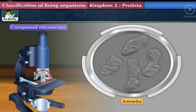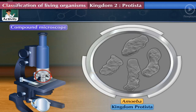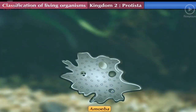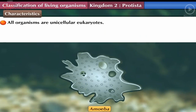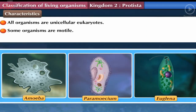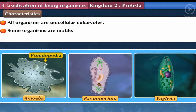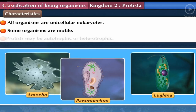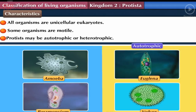These are amoeba — they belong to Kingdom Protista. All organisms of Kingdom Protista are unicellular eukaryotes, meaning they are made up of a single cell with a well-defined nucleus enclosed in a nuclear membrane. Some organisms are motile: amoeba moves with pseudopodia, paramecium moves with hair-like cilia, and Euglena moves with a whip-like flagellum. Protists may be autotrophic (e.g., Euglena and Volvox) or heterotrophic (e.g., amoeba and paramecium).